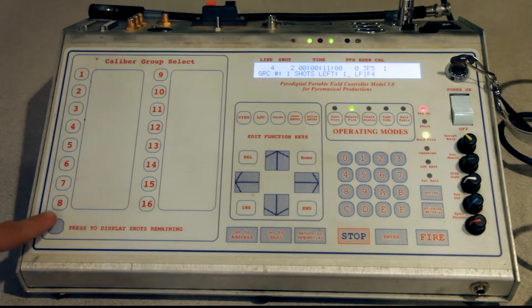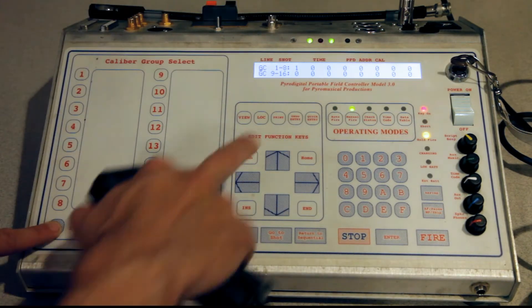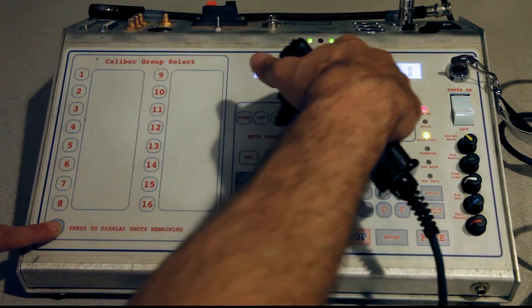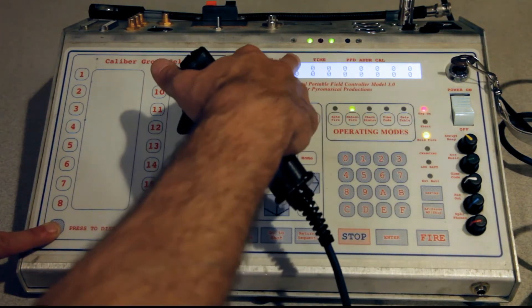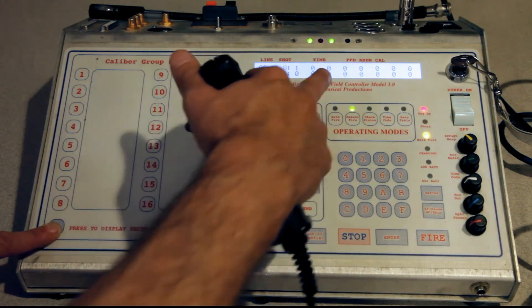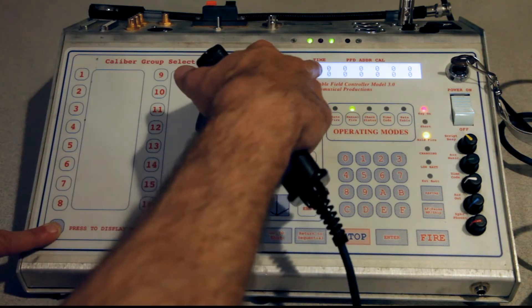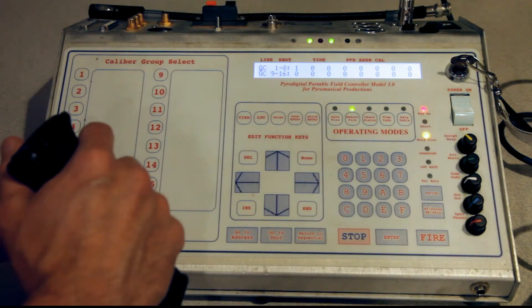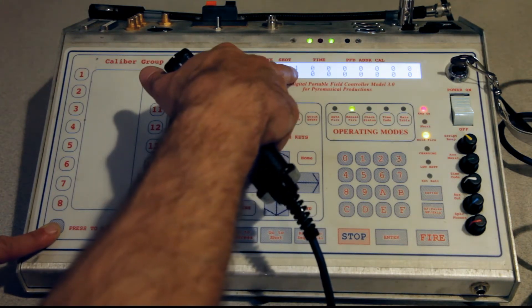You can always press this button here to display the remaining shots. The top lines correspond to groups one through eight. Group one, group two, group three, group four, and so forth. The eight on the bottom are groups nine through sixteen. If you had other caliber groups programmed that have been unfired since you went into manual fire mode, they would show the number of shots you have remaining in those particular caliber groups. Since we fired one of the two shots in our group one, we have one shot remaining in caliber group one.